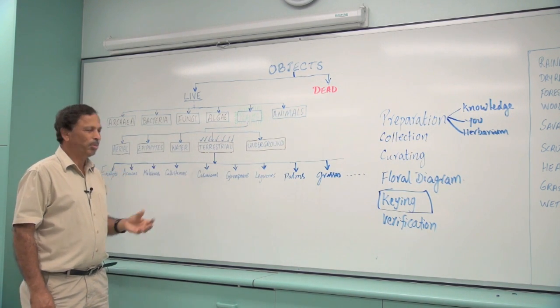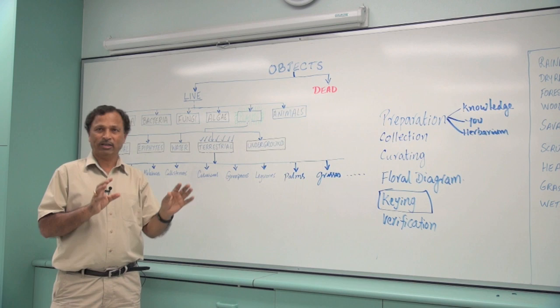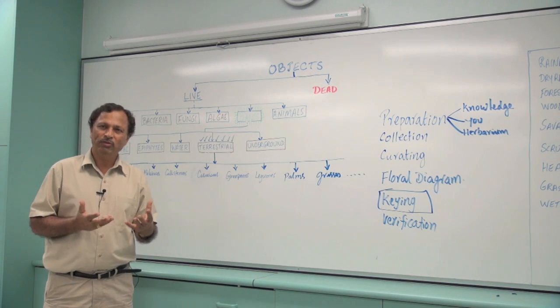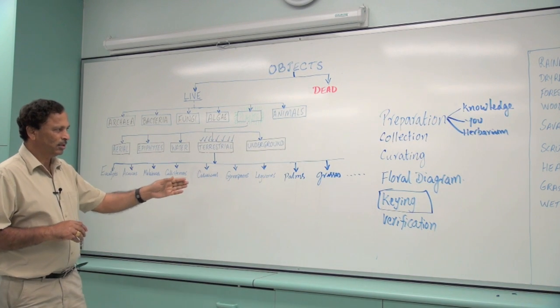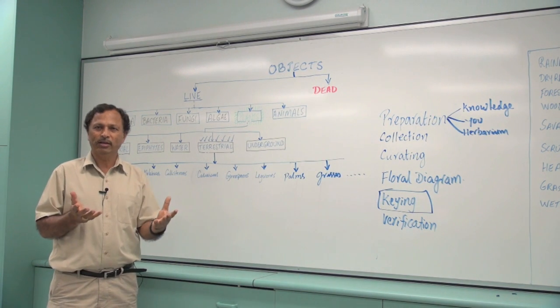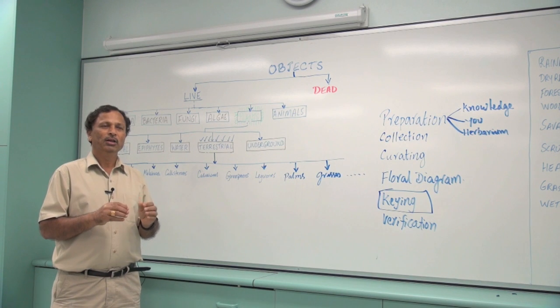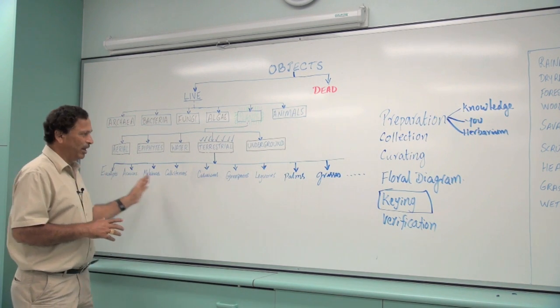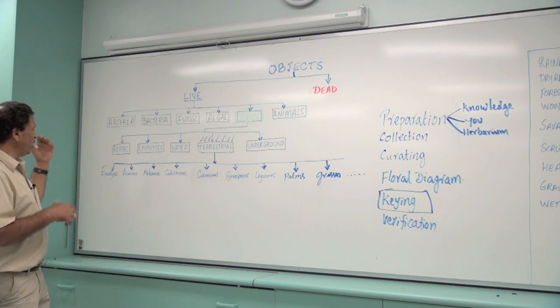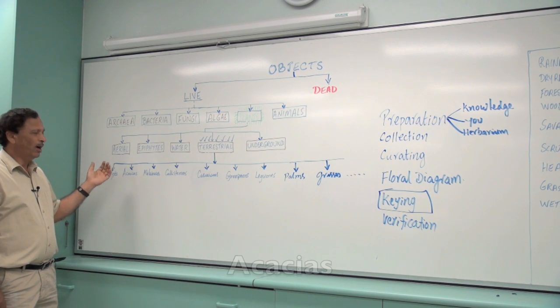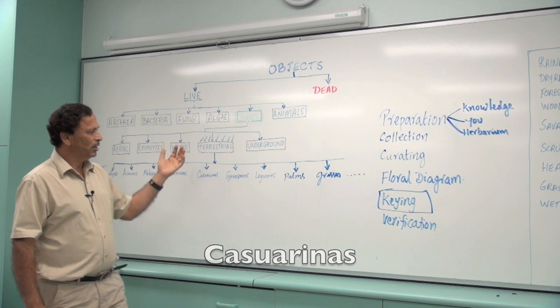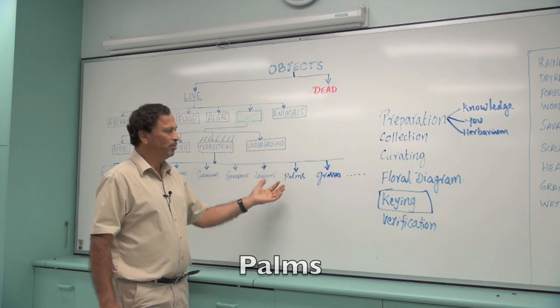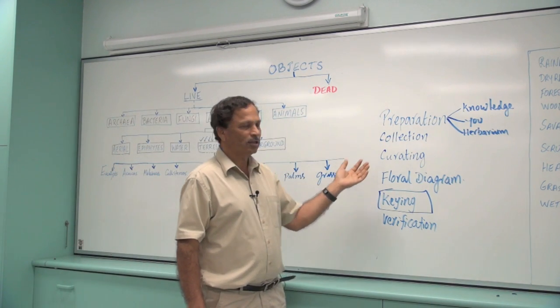Those terrestrial plants belong to different groups taxonomically, but for convenience I group them into these categories. That means it's purely for convenience. When you go out, you see eucalypts, acacias, melaleucas, casuarinas, legumes, palms, grasses, sedges, and so forth.